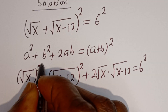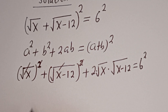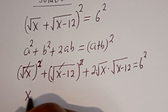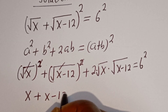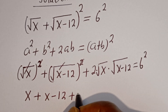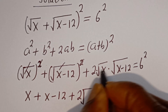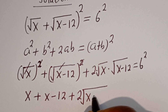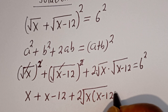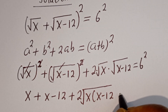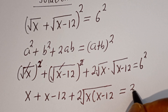Now, the square roots cancel: we have x plus x minus 12 plus 2 times square root of x times (x minus 12) is equal to 6 squared, that is 36.